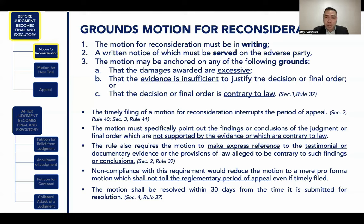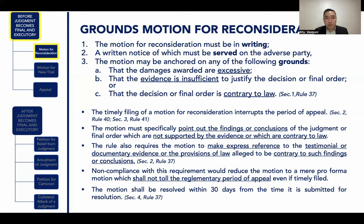The timely filing of a motion for reconsideration interrupts the period of appeal. In the motion, you must specifically point out the findings or conclusions of the judgment or final order which are not supported by evidence or which are contrary to law. The motion must make express reference to the testimonial or documentary evidence or the provisions of law alleged to be contrary to such findings or conclusions. The motion shall be resolved within 30 days from the time it is submitted for resolution.